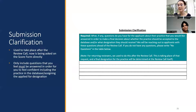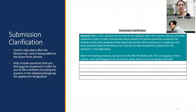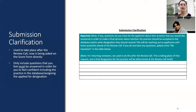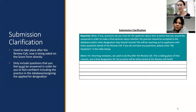The submission clarification piece is new — it used to take place after the review call, but we're now asking it on the score form directly. If you're reviewing a submission and have questions about how they engaged with partners or stakeholders, you include those questions on your score form. We ask you only include questions that you feel must be answered in order to feel confident in including the practice or giving them the designation they applied for — not questions based on curiosity alone.